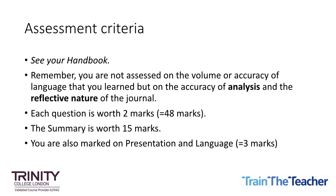If you wish to know the assessment criteria, see your course handbook. Remember, you are not being assessed on the volume of language you've learned but on the accuracy of analysis and the reflective nature of the journal, so don't spend excess time analysing the language itself. Each question is worth two marks and there are six questions per ULJ lesson for a total of 48 marks. The summary is worth 15 marks, which is a fair chunk of the weighting, so do give careful consideration to this section. You're also marked on the presentation of your assignment and on using correct and appropriately academic language for a total of three marks. The maximum total is 66 marks, and to get an A you need 59 marks.